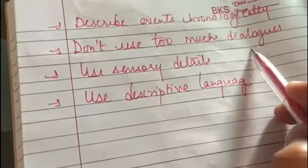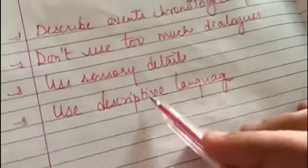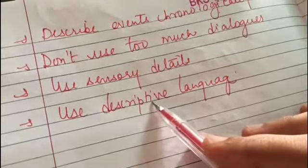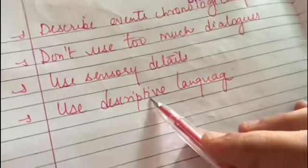Then you'll use less dialogues, not too much dialogues. Use sensory details like when describing something: sight, sound, smell, taste. You'll always use descriptive language like vivid verbs, adjectives, adverbs, but don't overuse them.